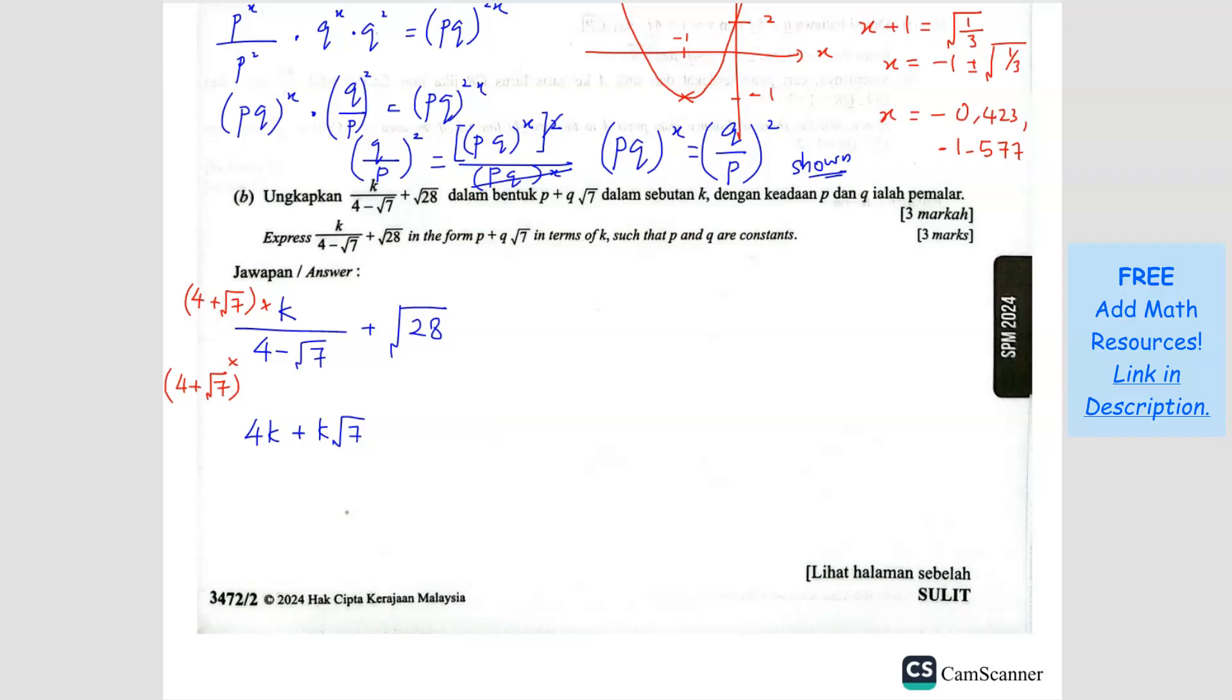So we're going to multiply. When we multiply, we will have 4k plus k√7 over... for this bottom here, I don't want you all to do manually. There's a way to do this. The 4 and the 4, you're going to times, you get 16. And then the √7 times √7, you multiply, you're going to get 7 again. Because root times root, you just cancel it. So you only get 7. And the middle here is always going to be negative. Plus √28, so what you will have is 4k plus k√7 over 16 minus 7, which will give you 9.